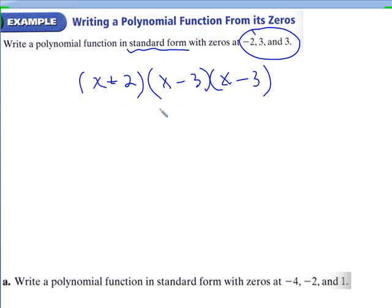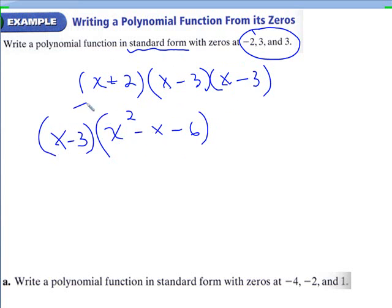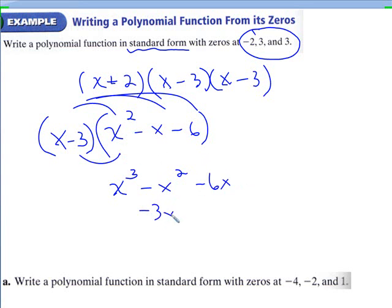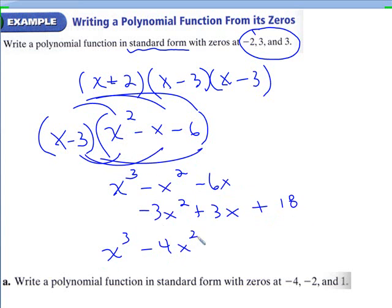Since they want it in standard form, we're going to FOIL everything, or use the box method. For the first two binomials you would end up with x squared minus x minus 6. Then multiply that by x minus 3: distributing gives x to the third, minus x squared, minus 6x, minus 3x squared, plus 3x, plus 18. Then combine all the like terms: x to the third minus 4x squared minus 3x plus 18.